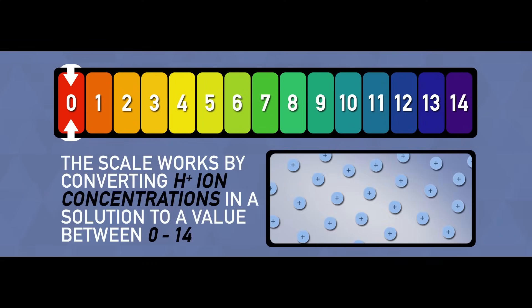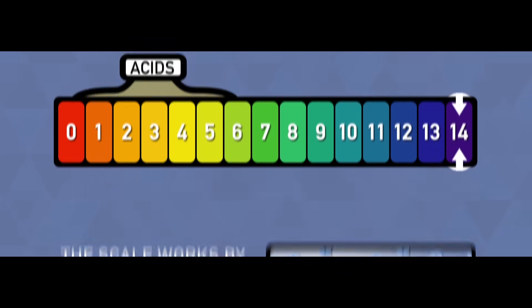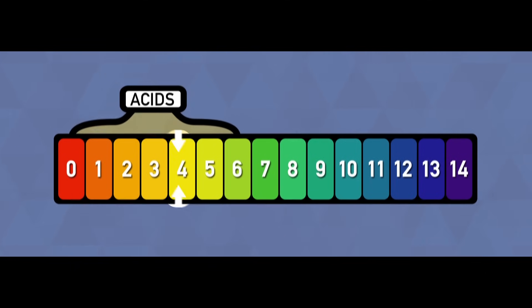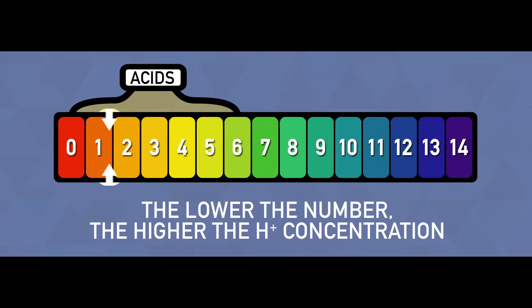His scale works by simply converting the concentration of hydrogen ions in a solution to a number between 0 and 14. If a chemical is acidic, then its pH will always be below 7 on the scale. The lower the number, the higher the hydrogen ion concentration.